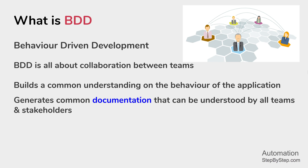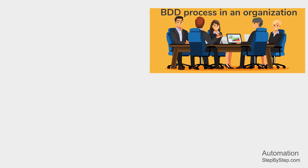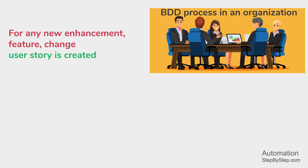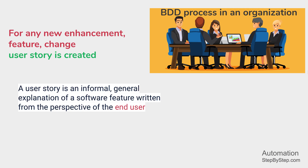Let me show you how exactly this documentation is created. If you look at a typical BDD process in an organization, it starts with a user story. For any new change, enhancement, or addition in the application, we create a user story in an agile process. A user story is an informal general explanation of a software feature written from the perspective of the end user.